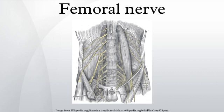The articular branch to the hip joint is derived from the nerve to the rectus femoris. The articular branches to the knee joint are three in number. One, a long slender filament, is derived from the nerve to the vastus lateralis, and penetrates the capsule of the joint on its anterior aspect. Another, derived from the nerve to the vastus medialis, can usually be traced downward on the surface of this muscle to near the joint; it then penetrates the muscular fibers, accompanies the articular branch of the highest genicular artery, pierces the medial side of the articular capsule, and supplies the synovial membrane. The third branch is derived from the nerve to the vastus intermedius.